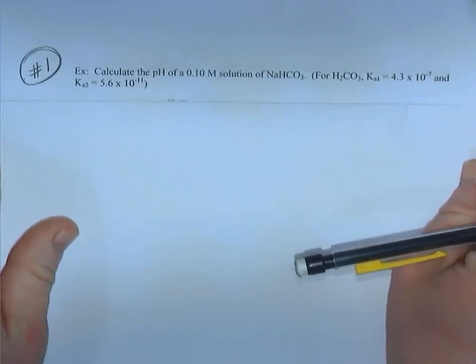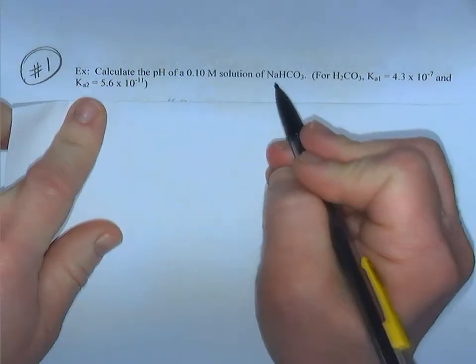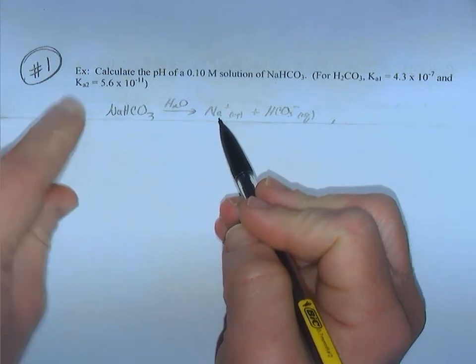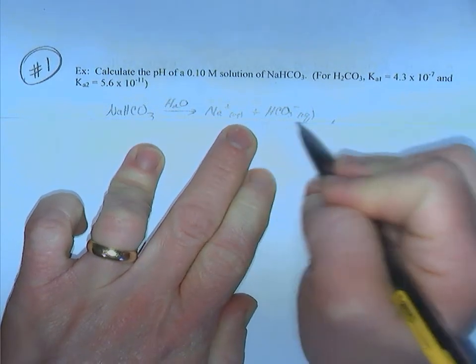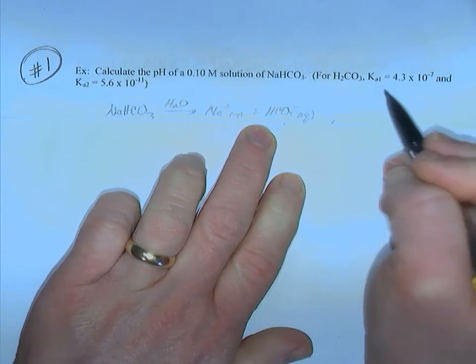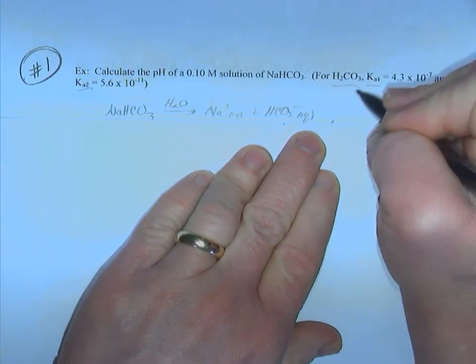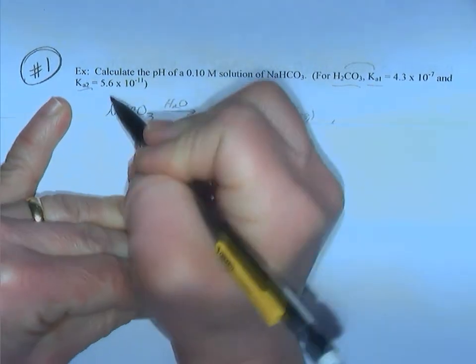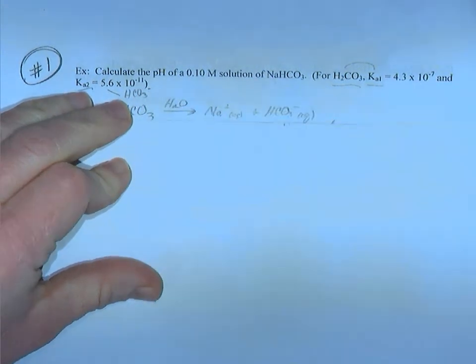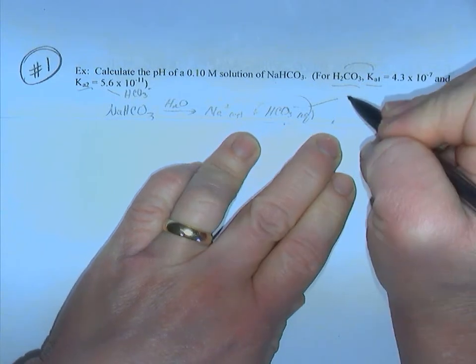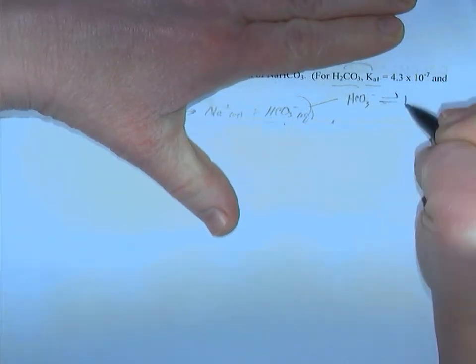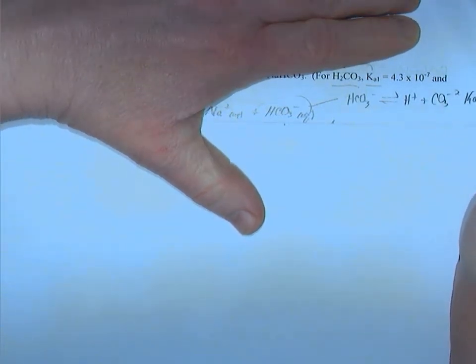The first example involves a salt that dissociates into the sodium ion and bicarbonate, HCO3⁻. We are given Ka1 for H2CO3 and Ka2 for HCO3⁻. We need to be on guard to diagnose if this is an amphoteric anion. Bicarbonate contains hydrogen, so it can release the hydrogen ion, acting as an acid to produce H⁺ and CO3²⁻ — described by Ka2. That is the acid reaction.